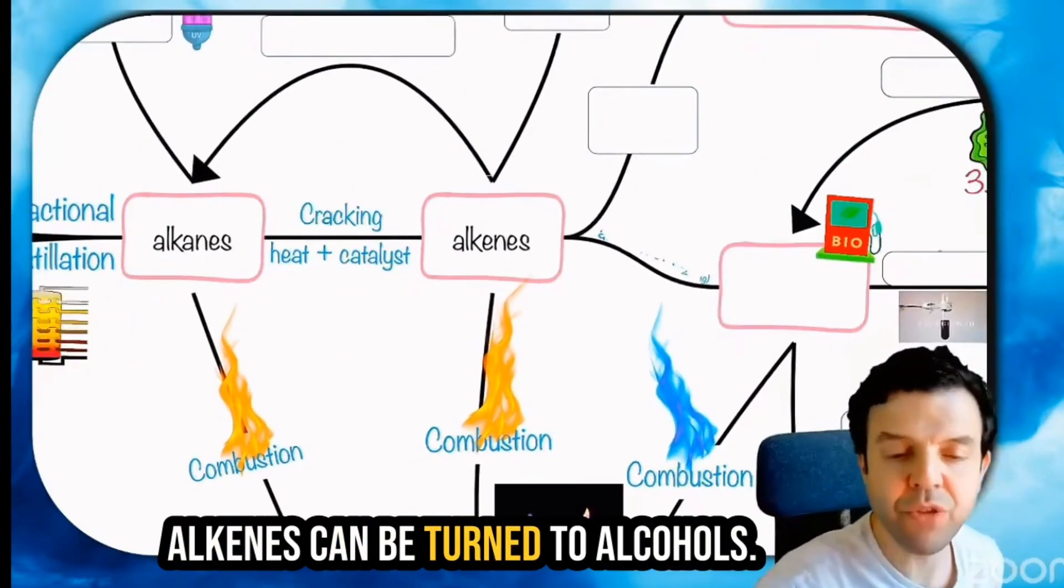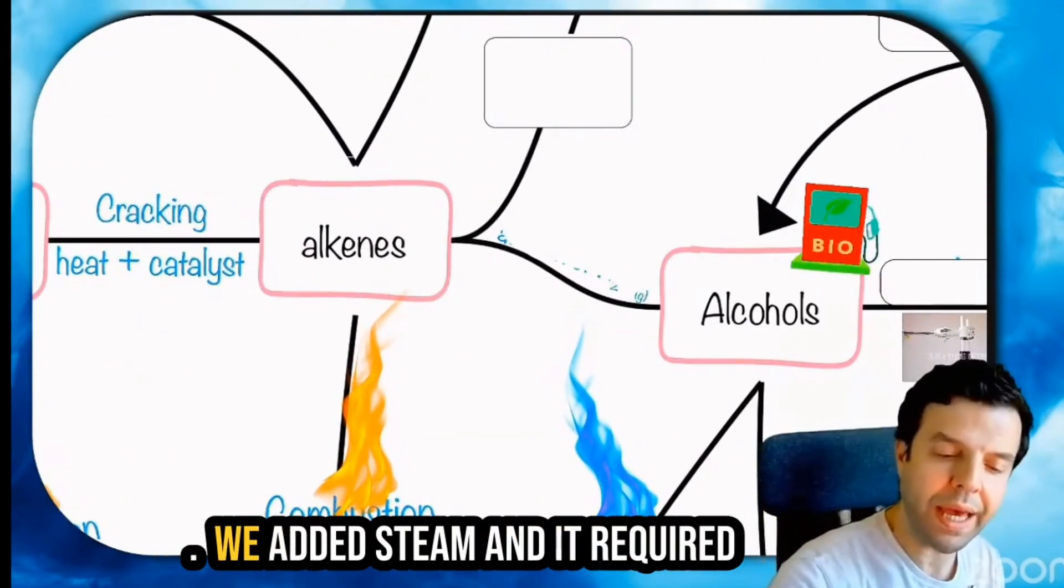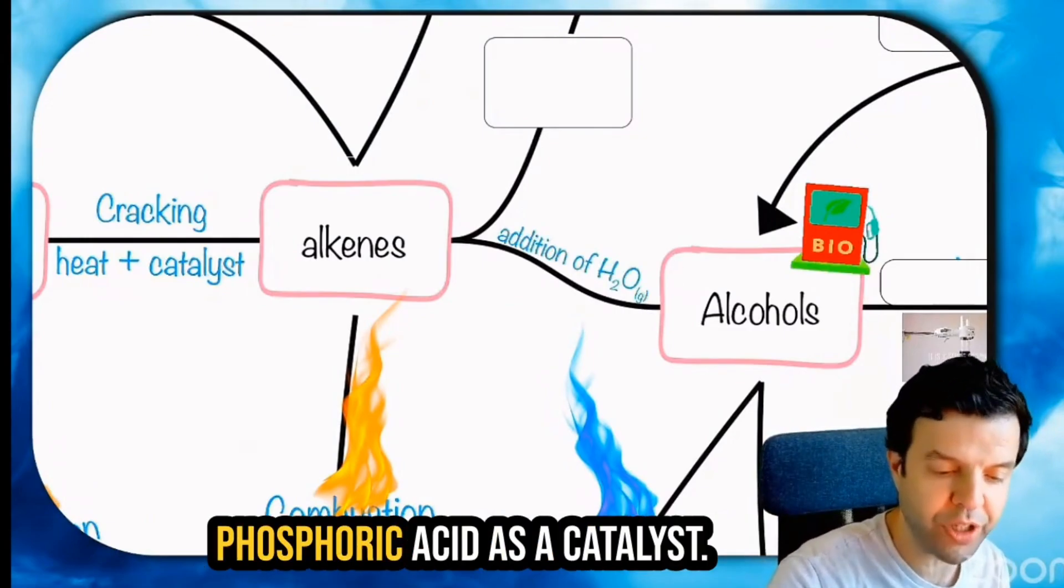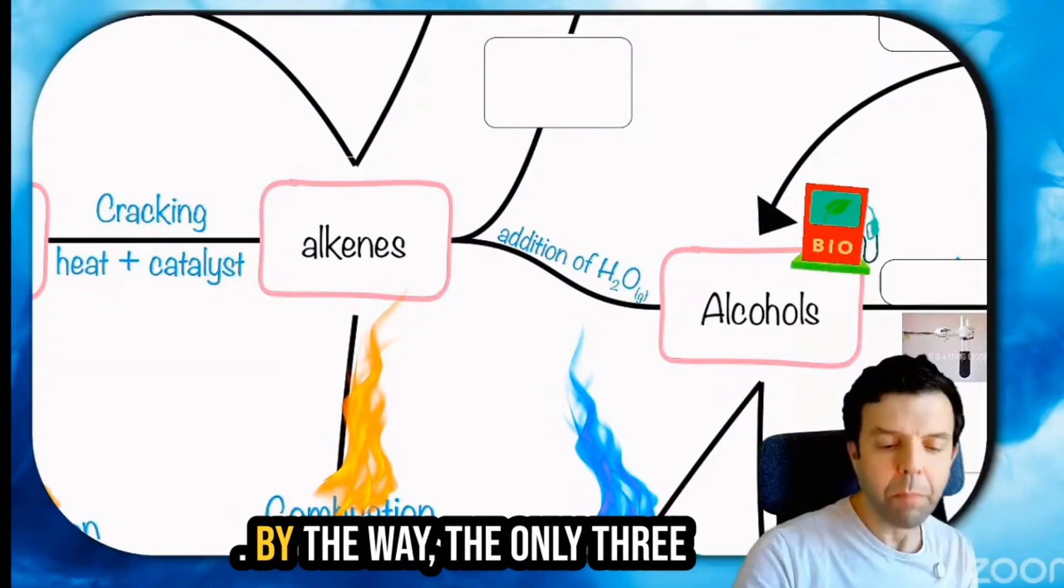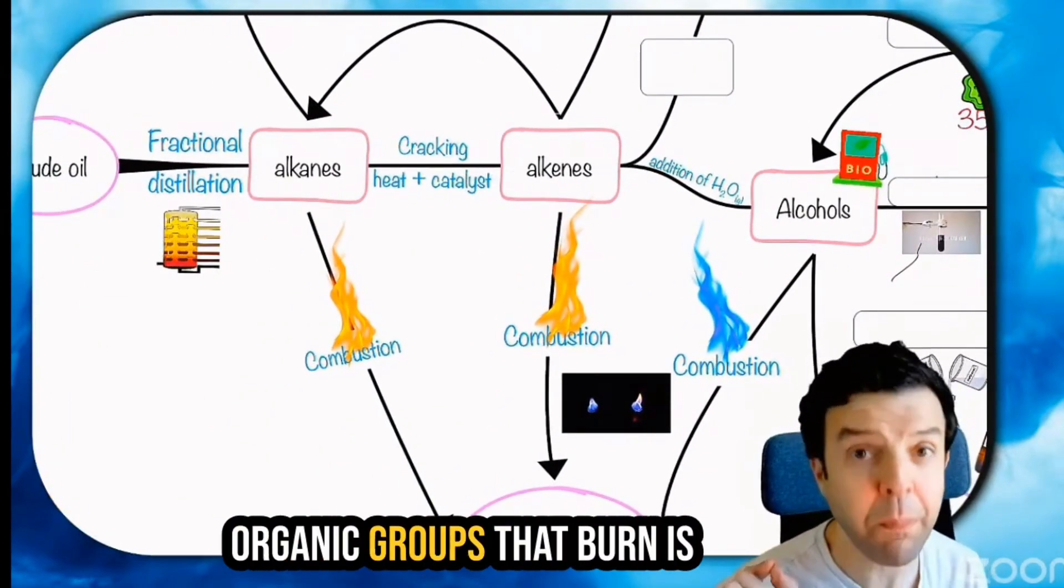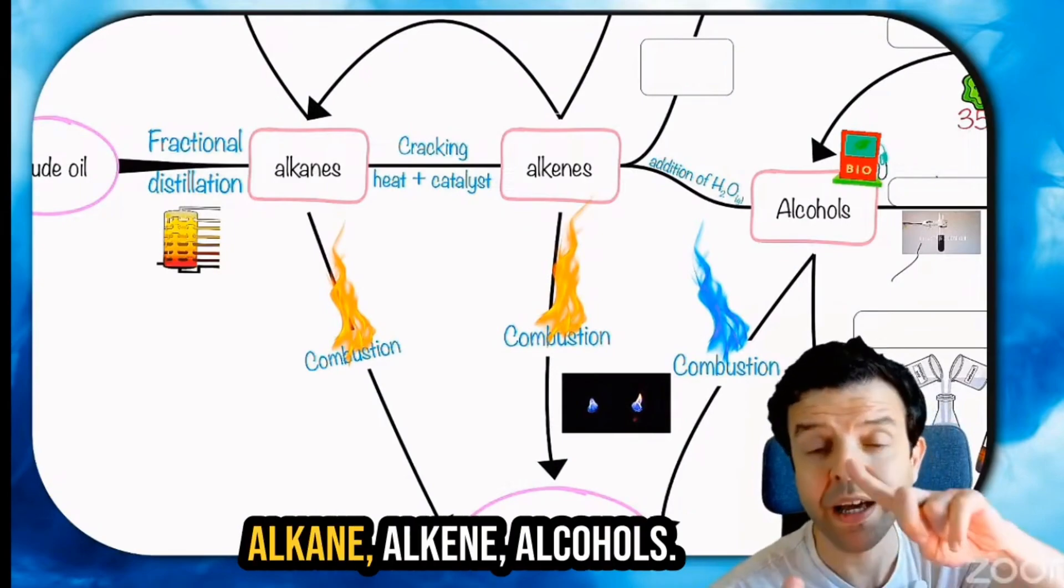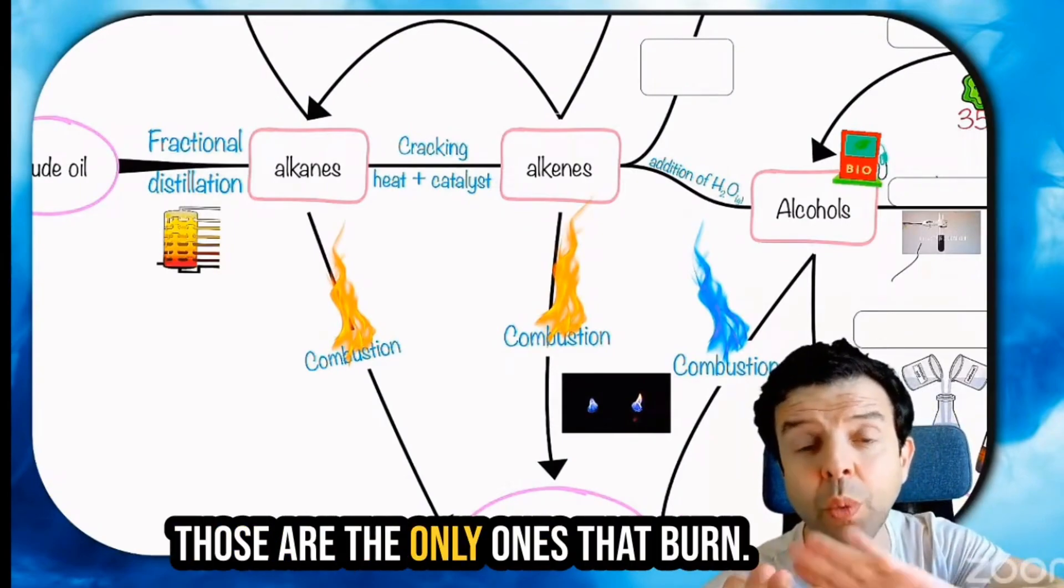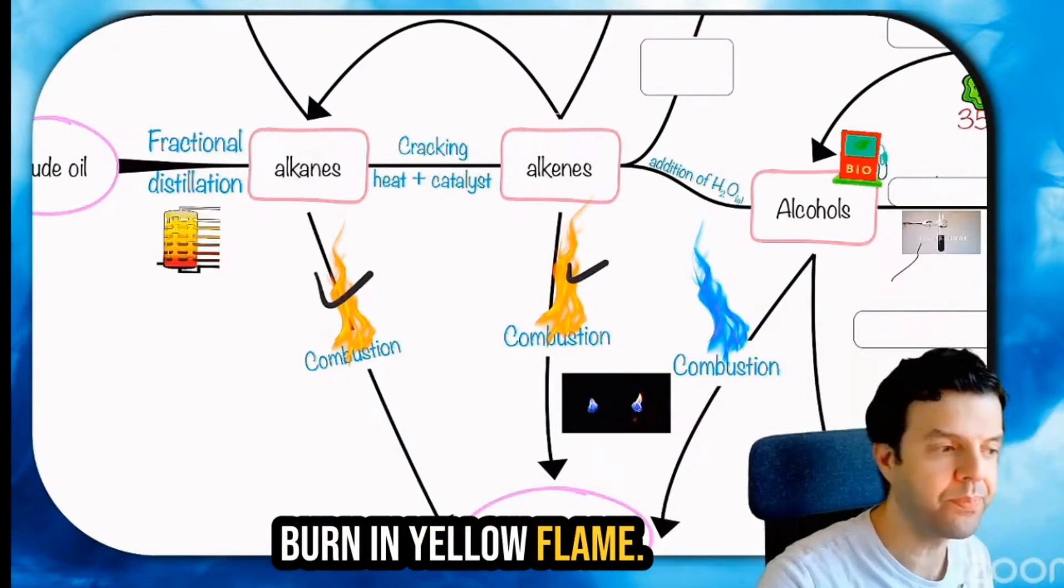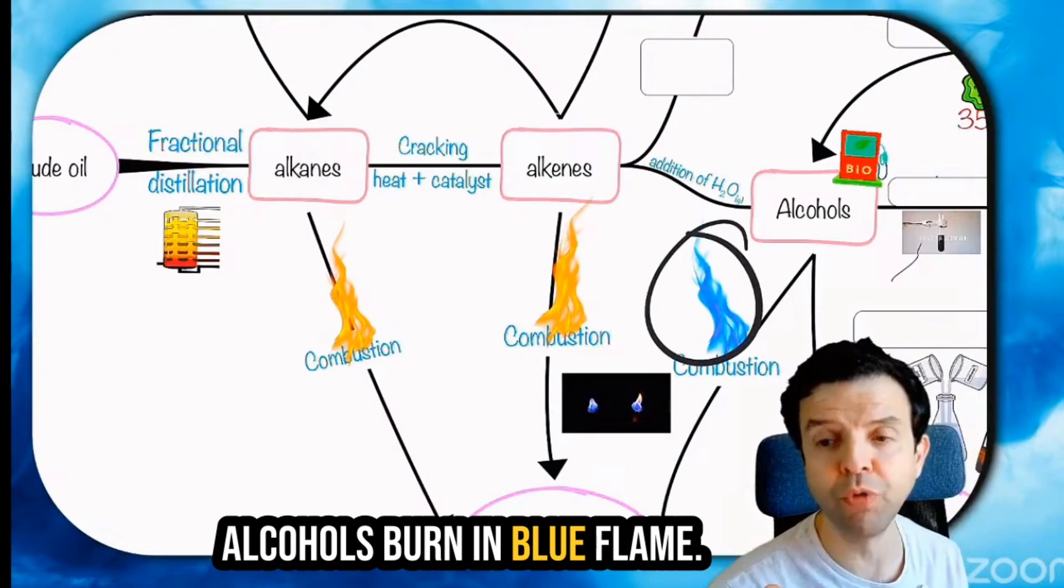Alkanes can be turned to alcohols. We added steam, and it requires phosphoric acid as a catalyst. By the way, the only three organic groups that burn are alkanes, alkenes, and alcohols. Alkanes and alkenes burn in yellow flame. Alcohols burn in blue flame.